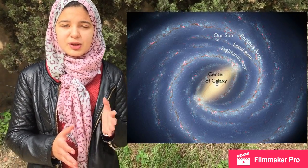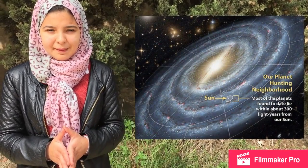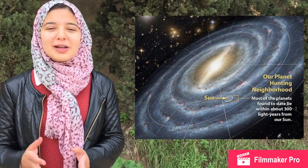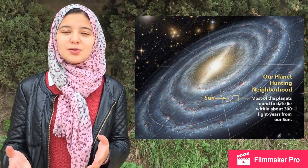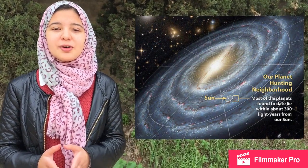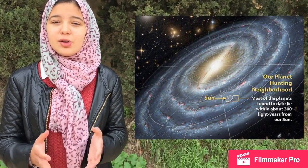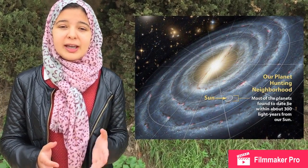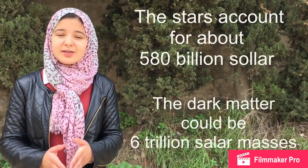The Milky Way measures about 100,000 light years across and is estimated to contain between 200 and 400 billion stars. But the stars we can see are just a tiny fraction of the complete galaxy. It is also surrounded by a vast halo of dark matter — this material is invisible and doesn't interact with regular matter or give any kind of radiation we can detect, but astronomers can measure its effect because it exerts a gravitational force on other matter. In fact, the Milky Way is made up mostly of dark matter: the stars account for about 580 billion solar masses, while the dark matter could be another 6 trillion solar masses.